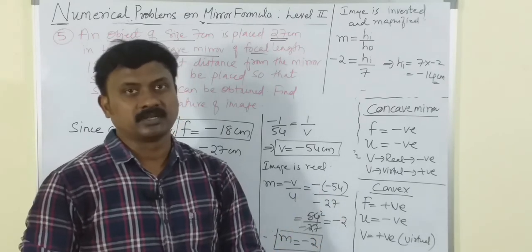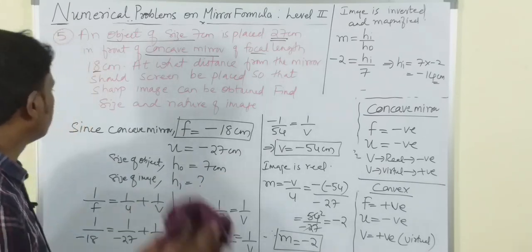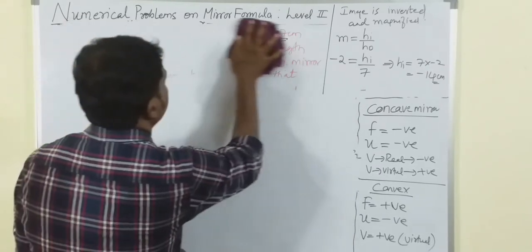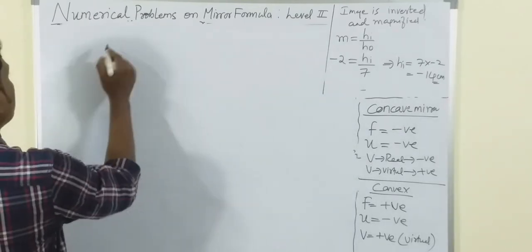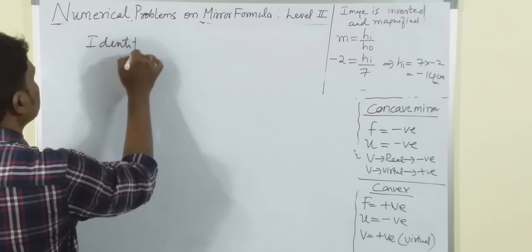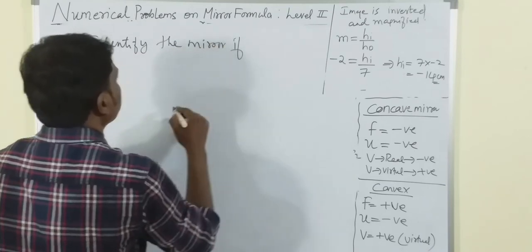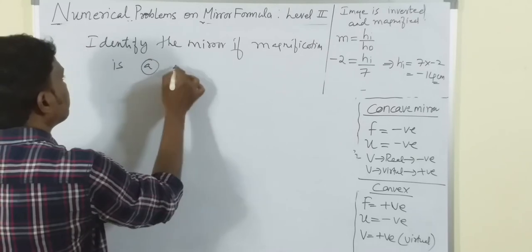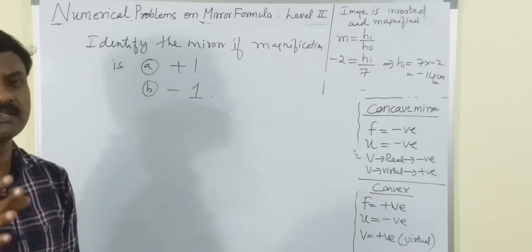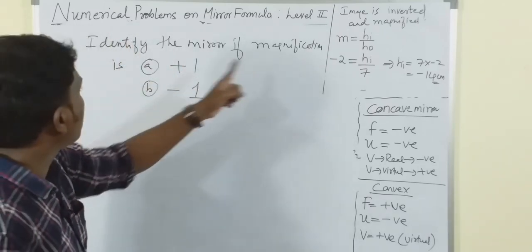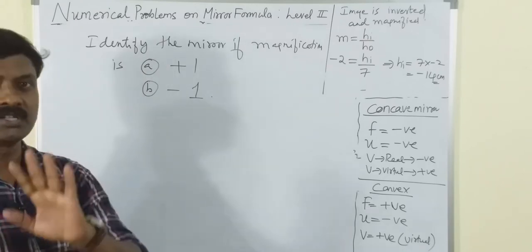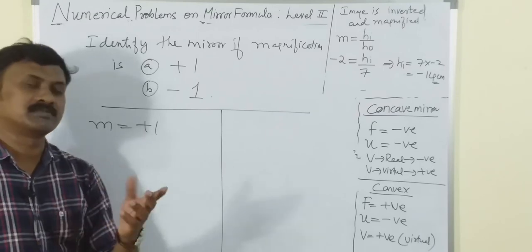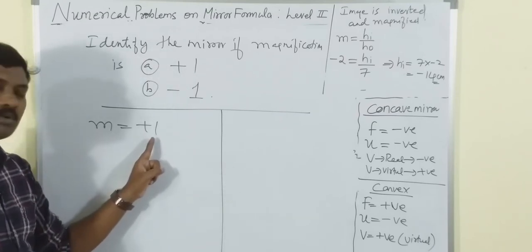Now let us look at a final small but important question: identify the mirror if the magnification is (a) +1 and (b) -1. Let us examine the first case: m = +1. What does m = 1 mean? The size of the object equals the size of the image.